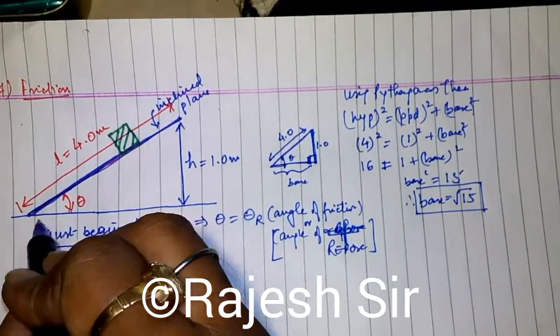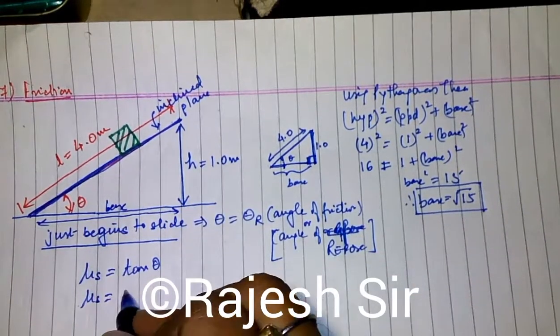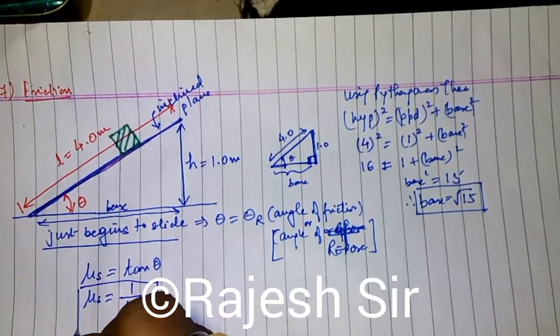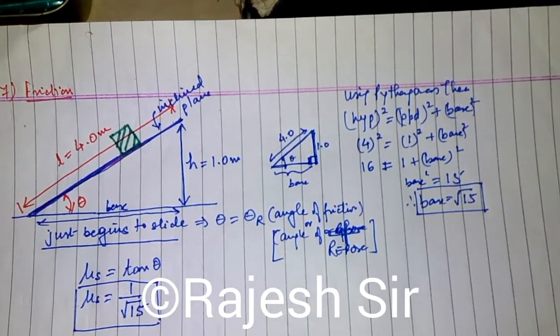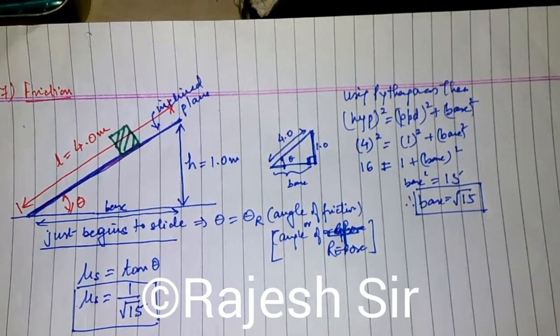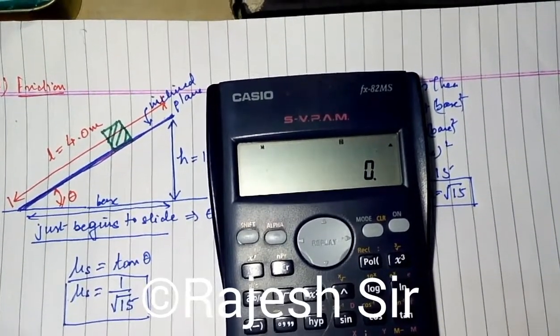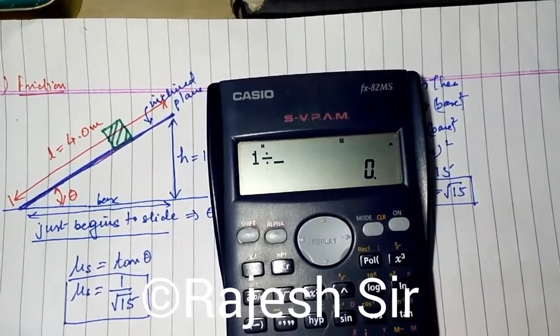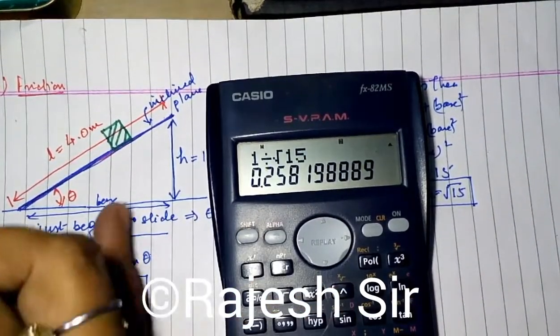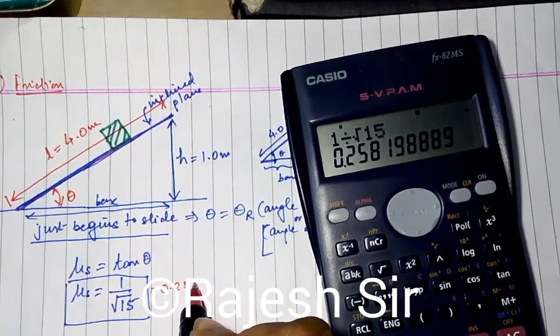For this right angle triangle, tan theta is perpendicular by base, so mu s value is 1 upon root 15. This way you can find the coefficient of friction. 1 divided by root 15 is 0.258.